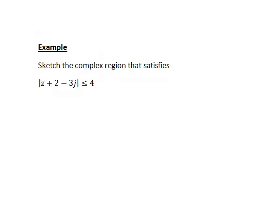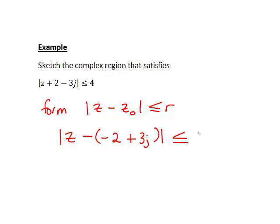Let's finish with a specific example. Suppose we want to sketch the complex region satisfying |z + 2 - 3j| ≤ 4. This is of the required form for a circular region: |z - z₀| ≤ r. Because it's z minus z₀, if we put a minus sign here, it changes the sign of 2 - 3j. It becomes |z - (-2 + 3j)| ≤ 4.